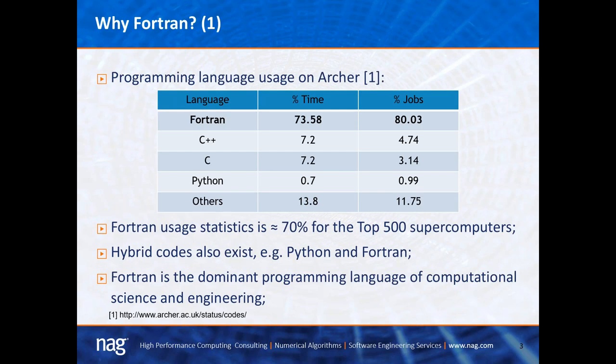So why should we still use Fortran? Fortran has been around for some time, and this table shows the percentage of CPU time of applications run on the Archer supercomputer based in Edinburgh. Just over 73 percent of CPU cycles and 80 percent of jobs are running code developed in Fortran. Fortran usage statistics for the top 500 supercomputers is around 70 percent. Fortran also exists in hybrid codes such as Python and Fortran, or C++ and Fortran, where computation-intensive kernels are implemented in Fortran.